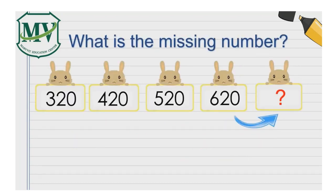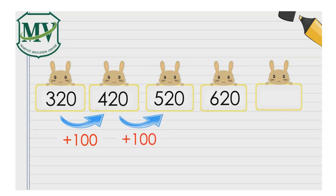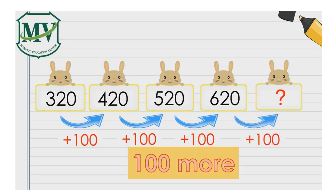What is the missing number? First, let's figure out the pattern. Compare 320 and 420. 420 has 100 more than 320. 520 has 100 more than 420. And so, the number pattern is 100 more. 620 has 100 more than 520. What number has 100 more than 620? It's 720.